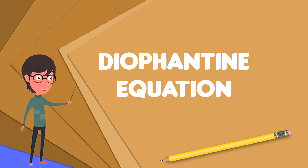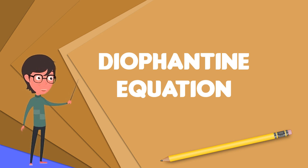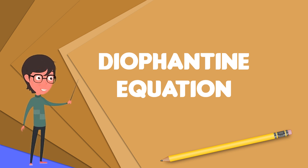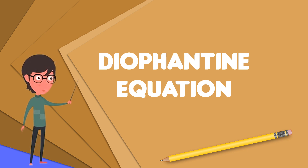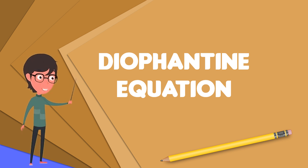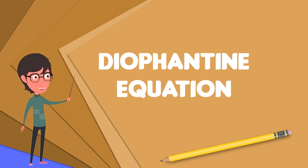A linear Diophantine equation equates the sum of two or more monomials, each of degree one in one of the variables, to a constant. An exponential Diophantine equation is one in which exponents on terms can be unknowns.